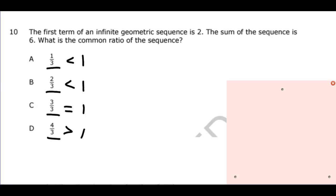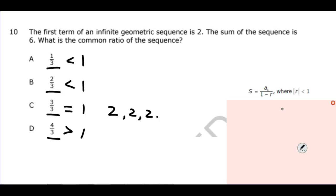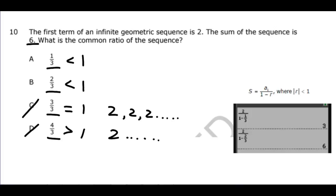When the ratio is 1, the number never changes — if the first number is 2, every number after would also be 2, so that sequence can never sum to 6; eliminate it. With 4 thirds, the sequence keeps getting larger and larger, so it doesn't make sense that starting with 2 and adding infinitely could yield 6; eliminate C and D. Using the infinite sum formula for |r| < 1 and substituting into the calculator, 2 thirds is the correct answer.